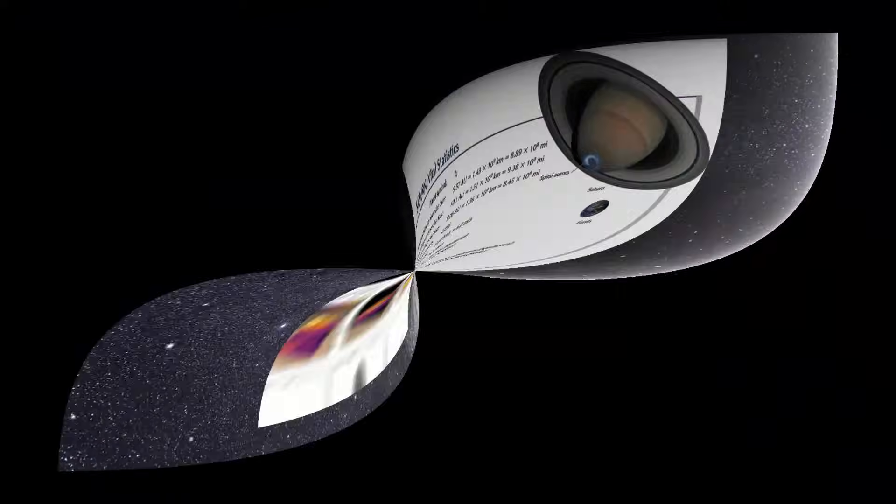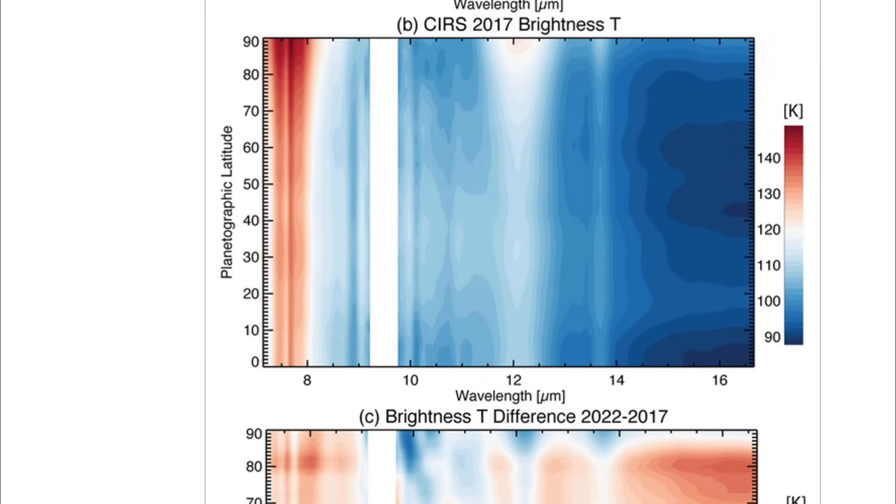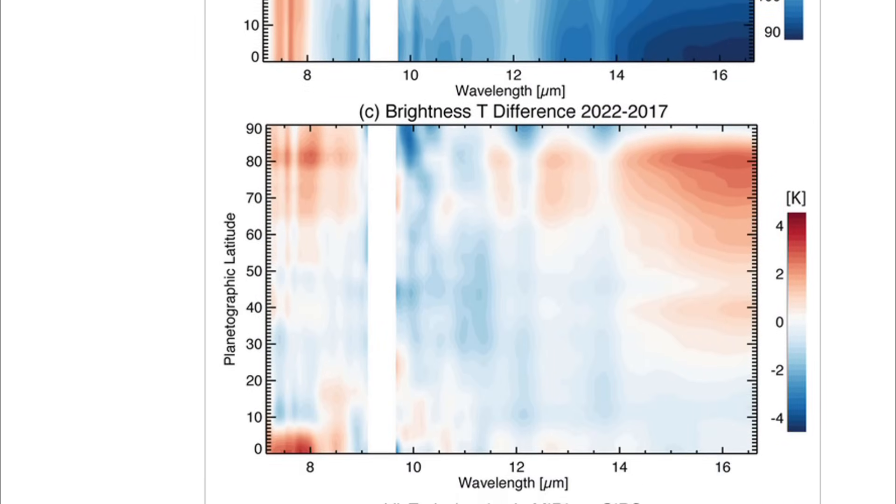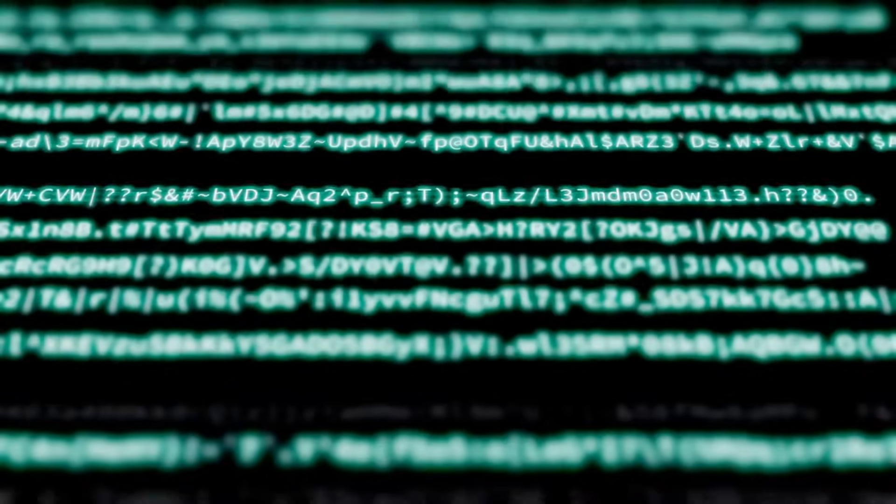Methane bands at 3.3 micrometers, ammonia features at 10 micrometers, trace hydrocarbons in the F-ring. No anomalies appeared in the official logs.